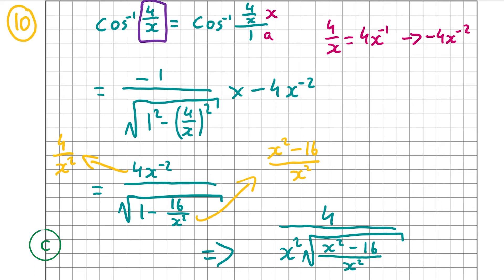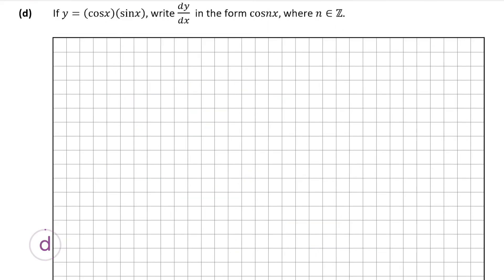So there we have our answer: the derivative of cos inverse of 4 over x. Now we're going to look at part d, which is the final part of the question and is also worth 10 marks.